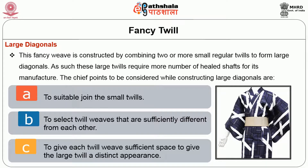The first fancy weave discussed is the fancy twill. Under fancy twills, the first category is large diagonals. This fancy weave is constructed by combining two or more regular twill weaves to form a large diagonal. These large twills require more heald shafts for manufacture. The chief points to consider are: suitably joining the small twills, selecting weaves that are sufficiently different from each other, and giving each twill weave sufficient space to give the large twill a distinct appearance.